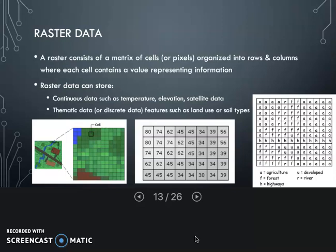As I said before, raster is like graph paper - it's a matrix of cells, also could think of them as pixels, organized into rows and columns where each cell contains a value representing information.